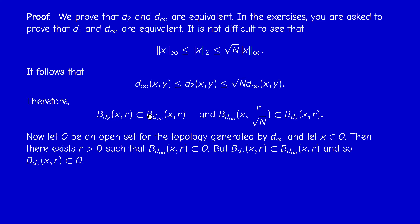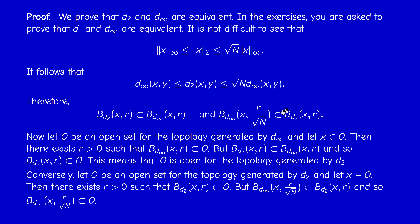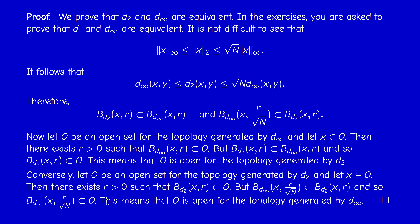Note that we reversed the order twice: d∞ ≤ d₂ implies B_{d₂} ⊆ B_{d∞}, which implies T_{d∞} ⊆ T_{d₂}. For the other inclusion: if O is open for d₂, take x in O; there exists a ball with respect to d₂ of some radius r contained in O. Since B_{d∞}(x, r/√n) ⊆ B_{d₂}(x,r), we found a d∞-ball centered at x contained in O, meaning O is open for d∞, so T_{d₂} ⊆ T_{d∞}. Therefore T_{d₂} = T_{d∞}, and with the same arguments you can prove d₁ and d∞, or d₁ and d₂, are equivalent.